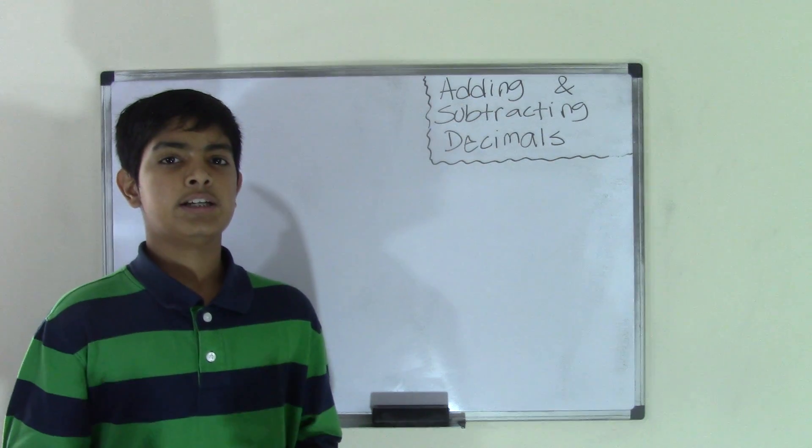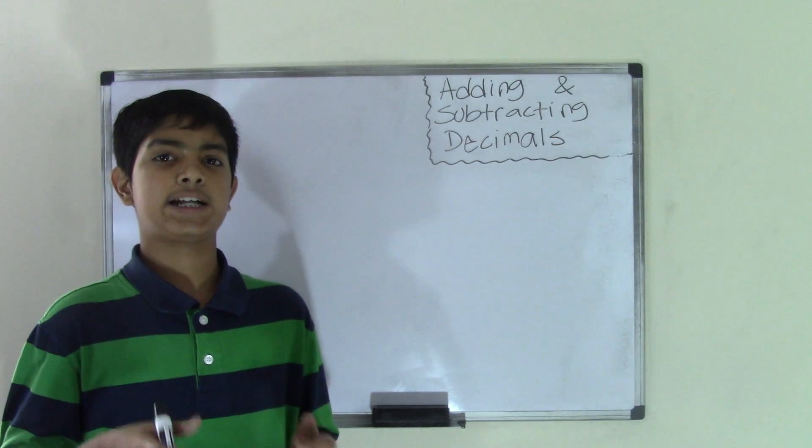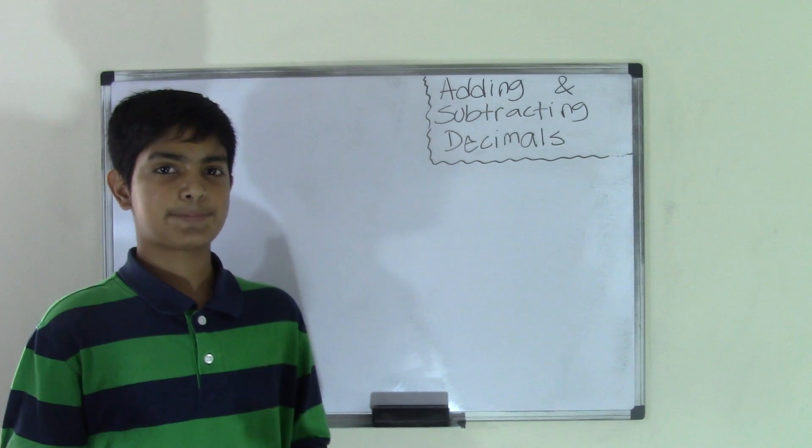So what are decimals? Decimal numbers are numbers that have a decimal point in them. And adding and subtracting decimal numbers is really easy and all it needs is practice.